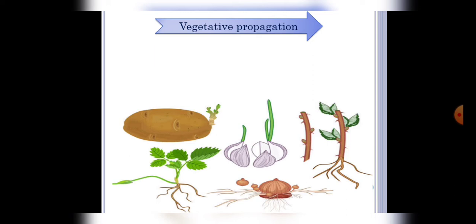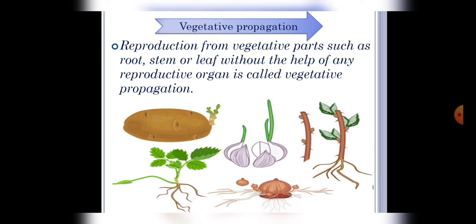Now we will discuss about vegetative propagation which is another subtype of asexual reproduction. So basically in this process reproduction takes place from vegetative parts of a plant such as root, stem and leaf.